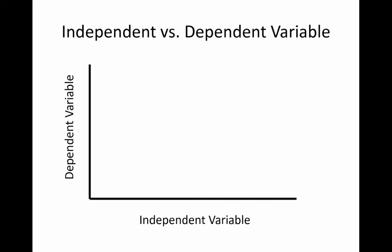On a graph, the dependent variable is on the y-axis and the independent variable is on the x-axis.